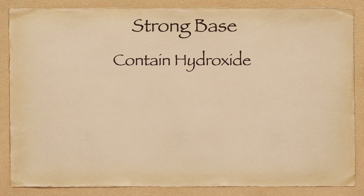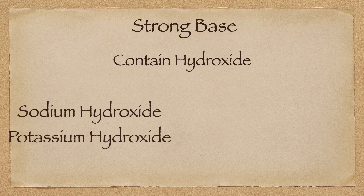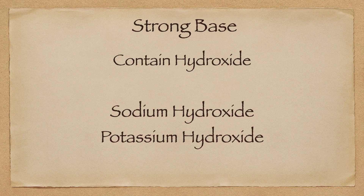Now let's talk about our strong base. Used for soap making, it has to contain hydroxide — that's the part that acts to break the fat or oil and turns them into glycerin and soap. Sodium hydroxide and potassium hydroxide are the two most commonly used bases for saponification. Sodium hydroxide, known as lye or caustic soda, is most commonly used to result in that hard bar of soap, whereas potassium hydroxide results in a softer bar and is usually used for making liquid soaps. We'll go over safety and mixing of the strong base lyes in another video.